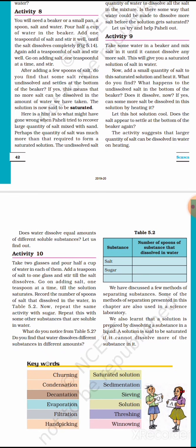Next, in Activity 10, what you are going to do? Take two glasses, same size glasses, and pour half a cup of water in two glasses also. After that you have to add a teaspoon of salt to one glass and stir till the salt dissolves. Go on adding salt one teaspoon at a time till the solution saturates. Then you have to record how many spoons of salt after dissolving in the water.